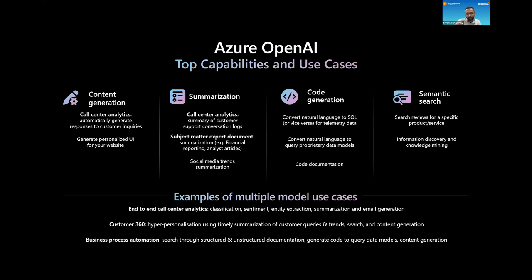By having the model look at all of this information and automatically generate the next set of responses, you enable call agent coaching in an enterprise context. Content generation can mean a lot of things: you can generate emails for marketing campaigns. In healthcare, when patient emails flood doctors, you can use this tool to automatically generate certain responses as a first draft — the doctor reviews, adds missing information, edits, and sends it back. Content generation has a lot of different use cases.